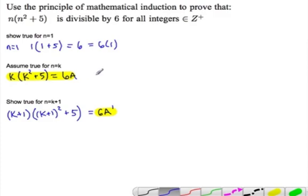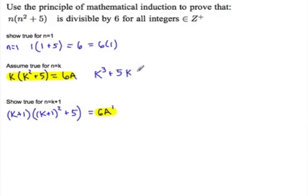I think maybe a k cubed. So k cubed plus 5k equals 6a. So therefore, k cubed is equal to 6a minus 5k. Okay, so this guy, we need a k cubed out of this guy.